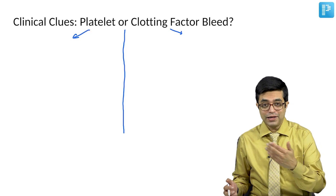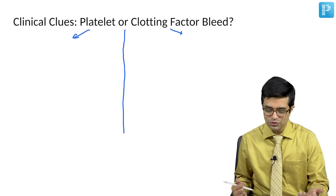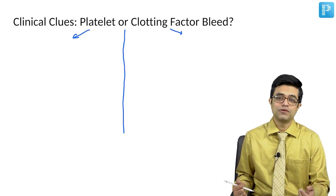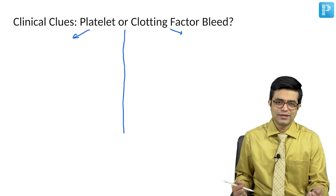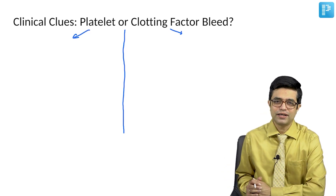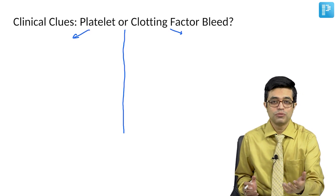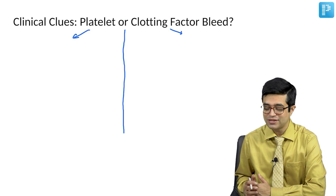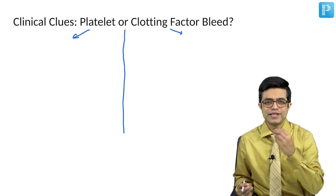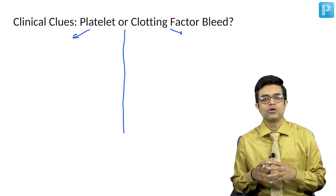In my viva at that time, I had a case related to bleeding disorder and I was asked: what is the size of petechiae and what is the size of purpura? I fumbled at that time but almost gave the correct answer. Even in super-speciality exams, you may get simple, innocuous-looking questions like these about the sizes of petechiae and purpura. This is actually a very controversial thing.